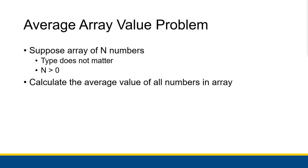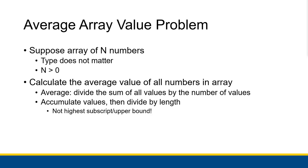Suppose I have an array that has numbers — it doesn't matter exactly what type as long as they are numbers. We can assume the array has a size greater than zero. What we want to do if we have all of those n values in our array is calculate the average value of everything stored in the array. The average of a group of numbers is you take the sum of all of those values and then divide it by the number of values.